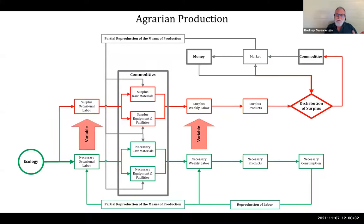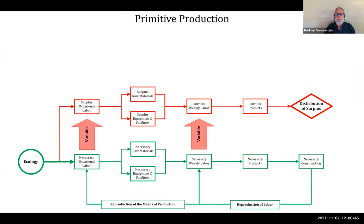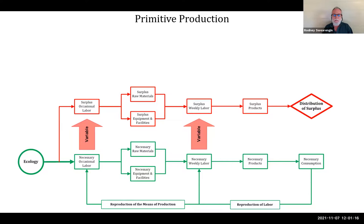Earlier than burger production is agrarian production — this is feudalism. And before that we have primitive production, which is kind of a thought experiment Marx developed. He supposed a primitive form of production, and while he didn't have hard evidence for it, in the subsequent century and a half since Marx was writing, this has been substantiated. There's even primitive production going on today in parts of Papua New Guinea, so it can be observed and is very consistent.